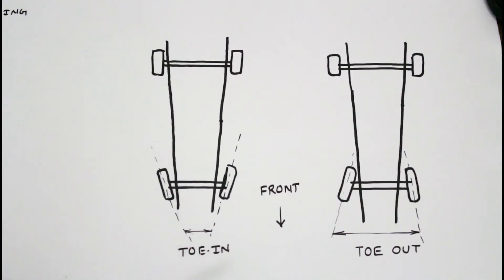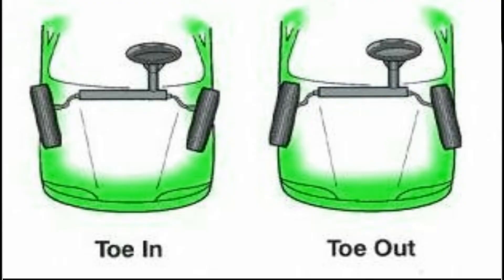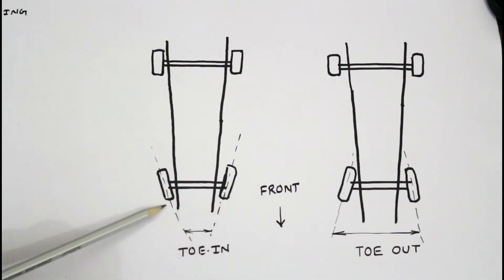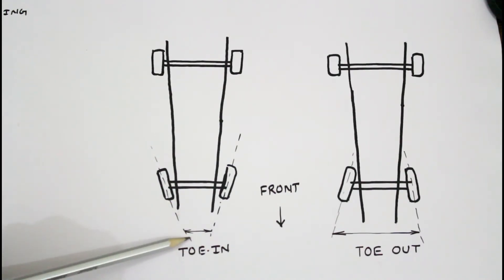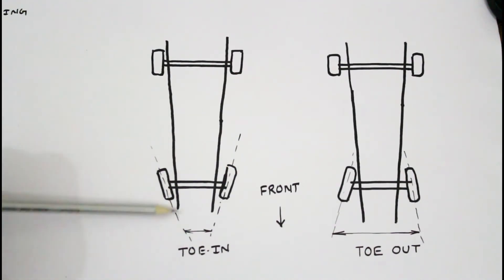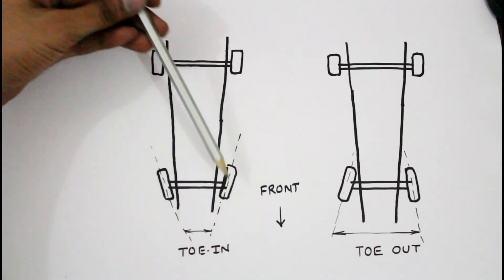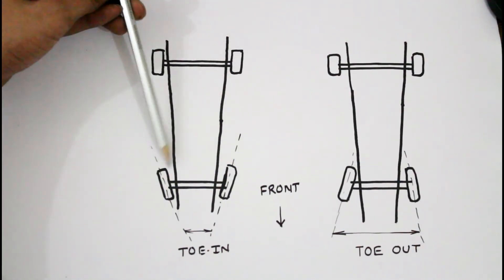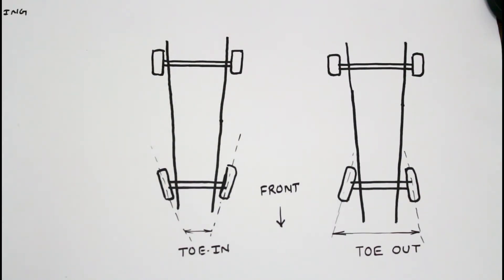The next is toe, and the types of toe are toe-in and toe-out. If the distance between the front wheels at the front end is less than the distance between them at the rear, it is called toe-in. Toe-in serves purposes like ensuring the parallel running of wheels and stabilizing the steering.